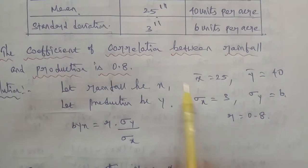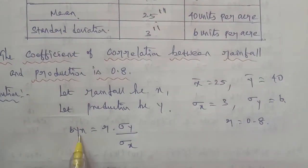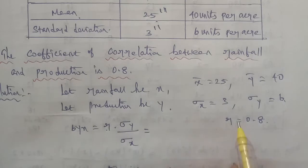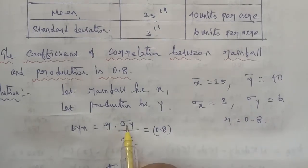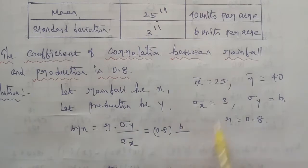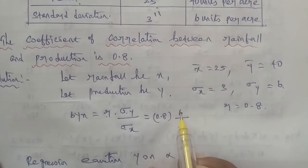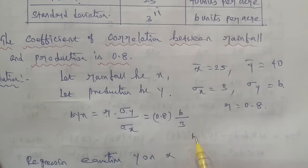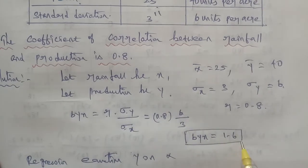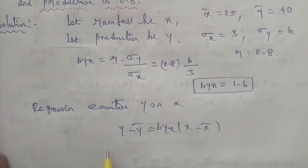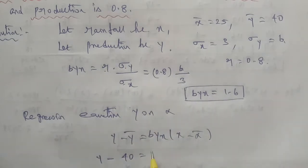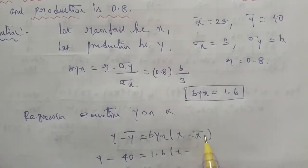In the given question, the mean and standard deviation values are given. So the b-y-x formula is r into sigma y divided by sigma x. Therefore, substituting the values: 0.8 into 6 divided by 3. Calculating 0.8 into 6 divided by 3, the b-y-x value is 1.6. Now substituting into the regression equation: y minus y-bar equals 1.6 into x minus x-bar, where x-bar is 25.